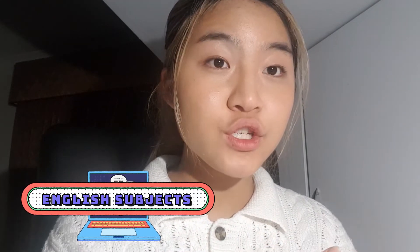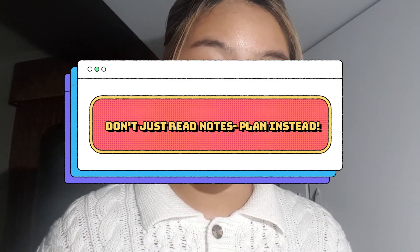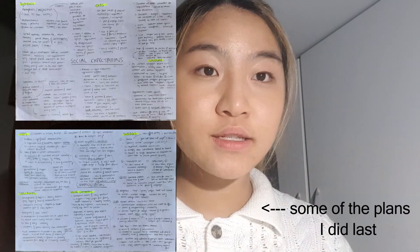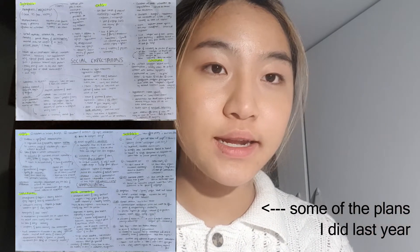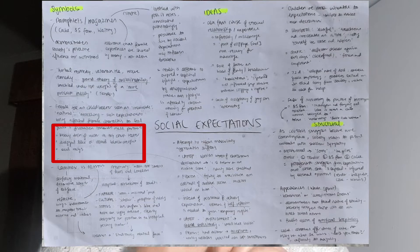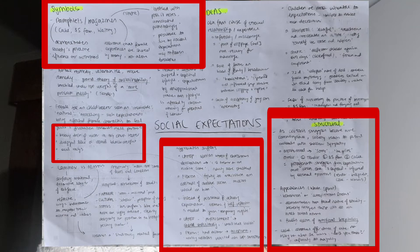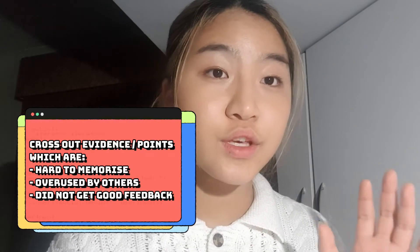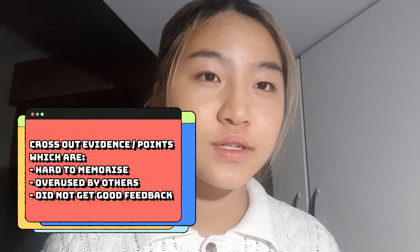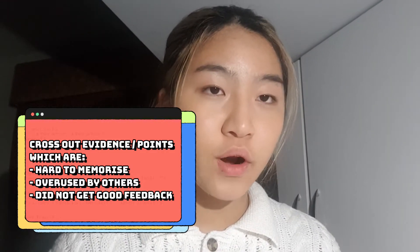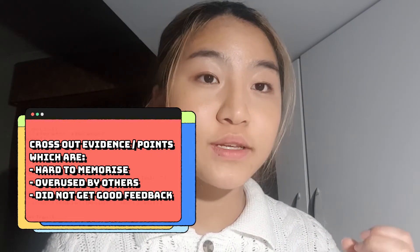A really important thing for English: do not just read over the notes you made over the year. Write the prompt in the centre of a page and brainstorm as many different pieces of evidence that connect to that prompt — things like quotes, symbols, structural features, and authorial intent. After you've created that brainstorm, cull out pieces of evidence that you think you won't be able to memorise or that are too commonly used. This will ensure the evidence you memorise will be unique and strongly marked against other students. Do this brainstorm for at least five to ten different prompts — each should take around 30 minutes, and it's okay to look at notes.